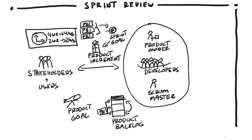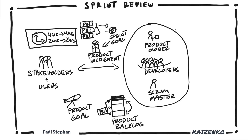And that's the Sprint Review: a time boxed event that occurs towards the end of the sprint, for the Scrum team to collaborate with the stakeholders and inspect the product increment and the progress being made towards the product goal, and to adapt the product backlog accordingly.